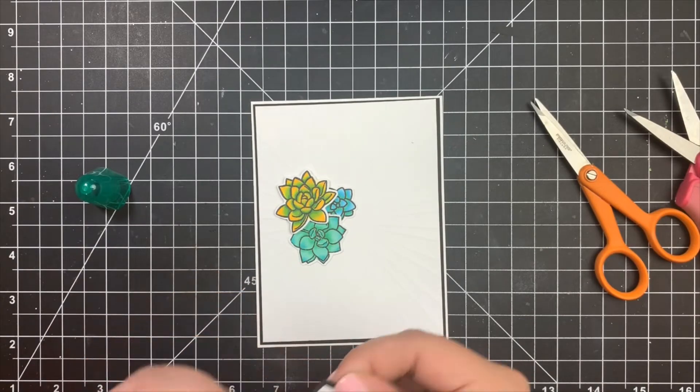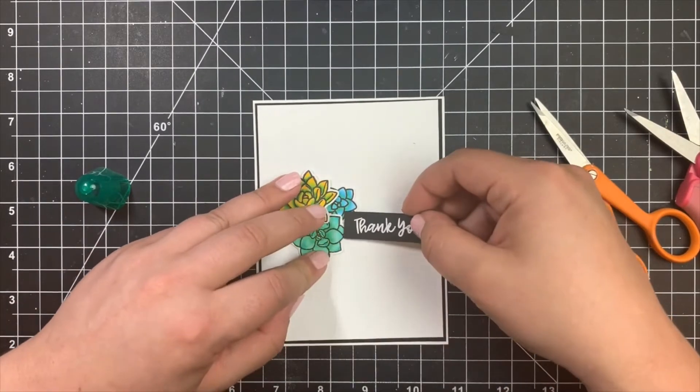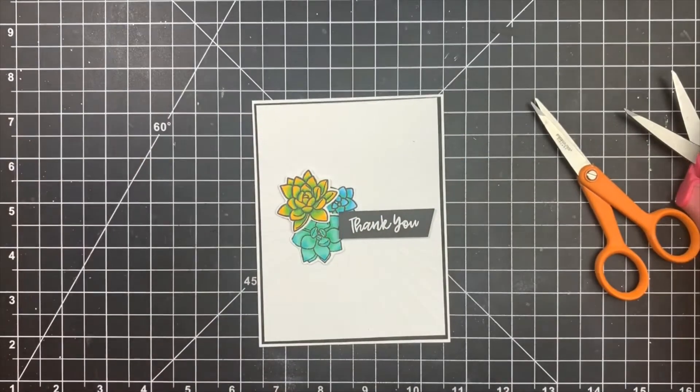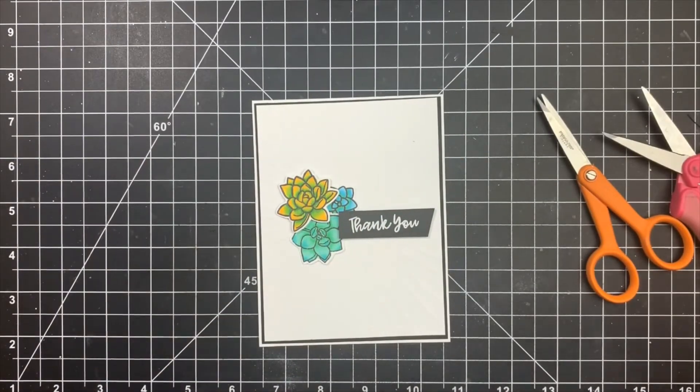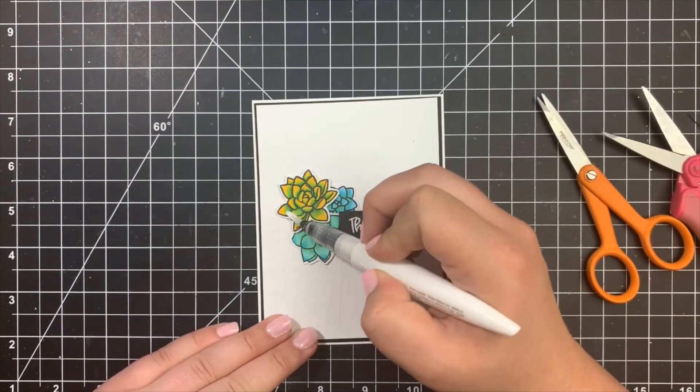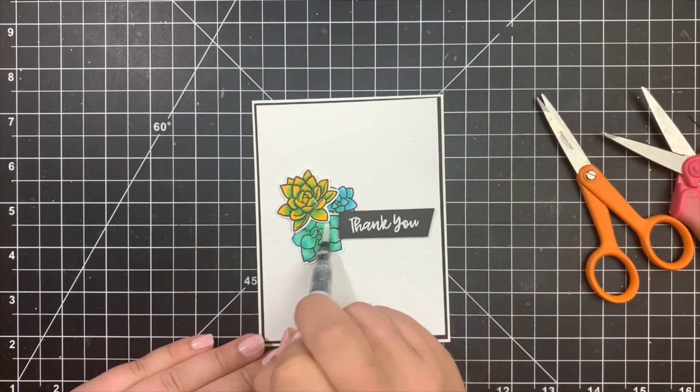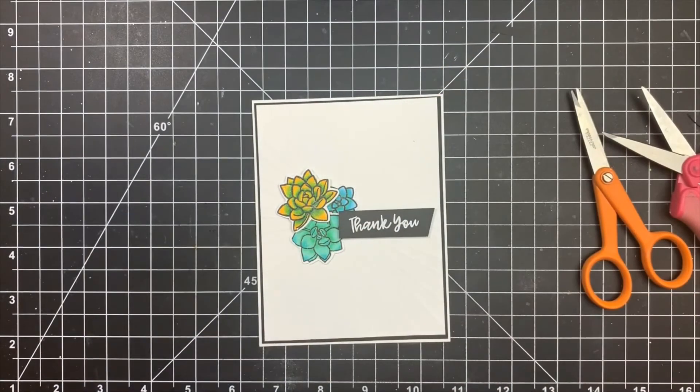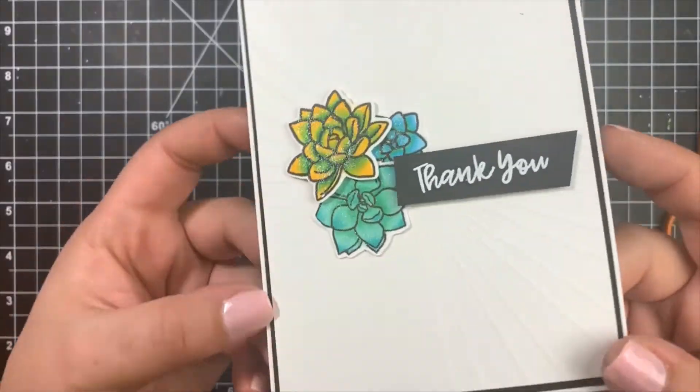I have finished off the card adding some sparkle with a Nuvo Aqua Shimmer pen, which you can and probably should do this before adhering your succulents down because it's kind of hard to fit that pen into those areas like underneath the succulents. But I should know this by now; I add sparkle to everything. But that is the card for today, guys. Thank you guys so much for stopping by and have a great day. Bye!